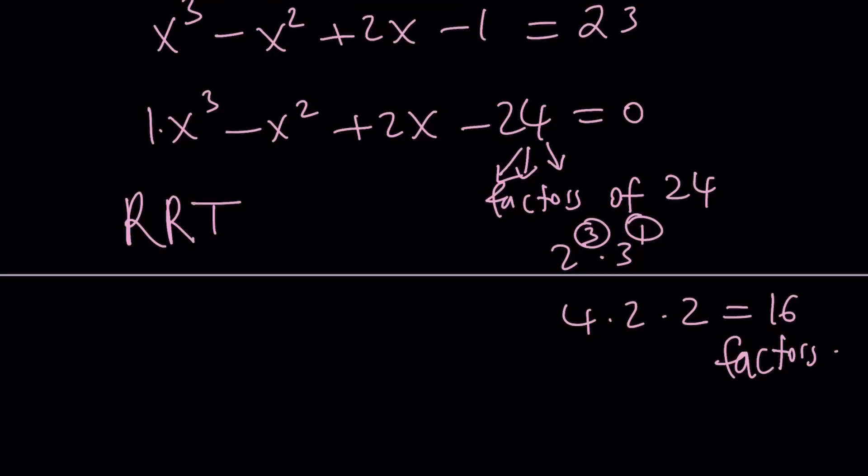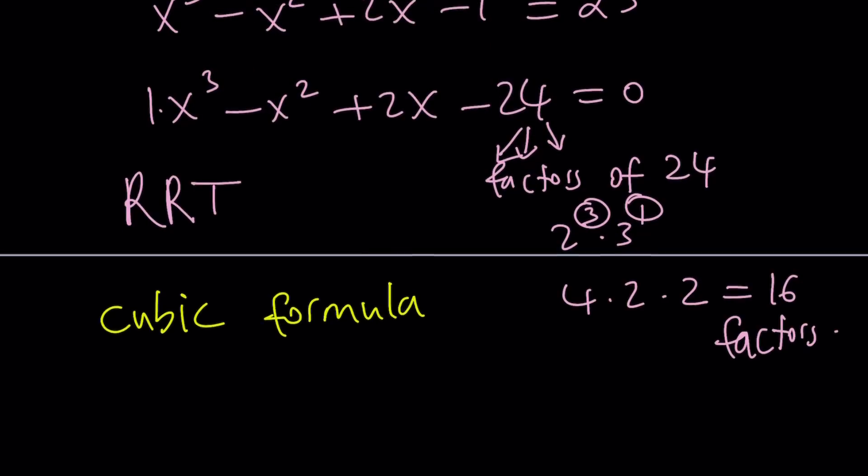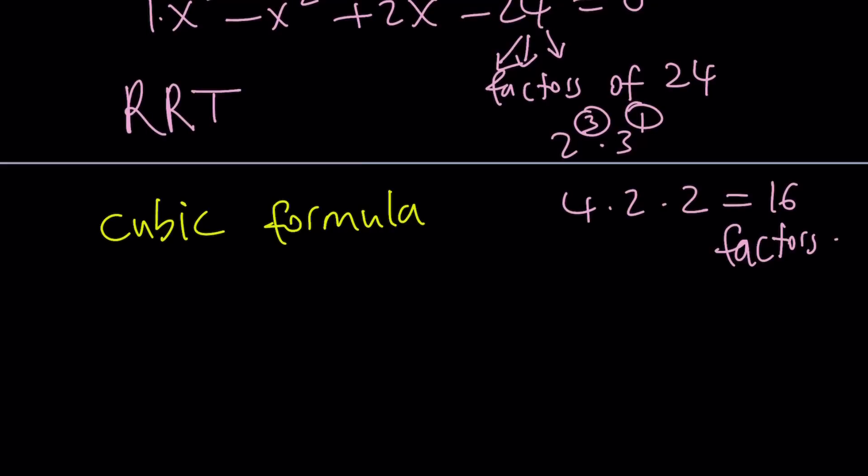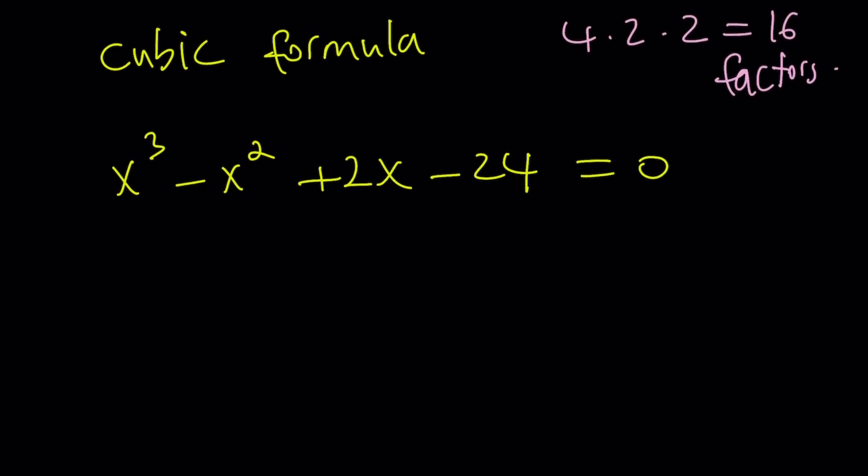That's a method, and obviously you can automate this. You can use a computer, Wolfram Alpha, and so forth. We're going to use another method, but RRT is one. You could also use the cubic formula. How does it work? We've done quite a few examples. Let's talk about this briefly before I start diving into the special method. I'm going to save it for last, because that is the funnest method in my opinion.